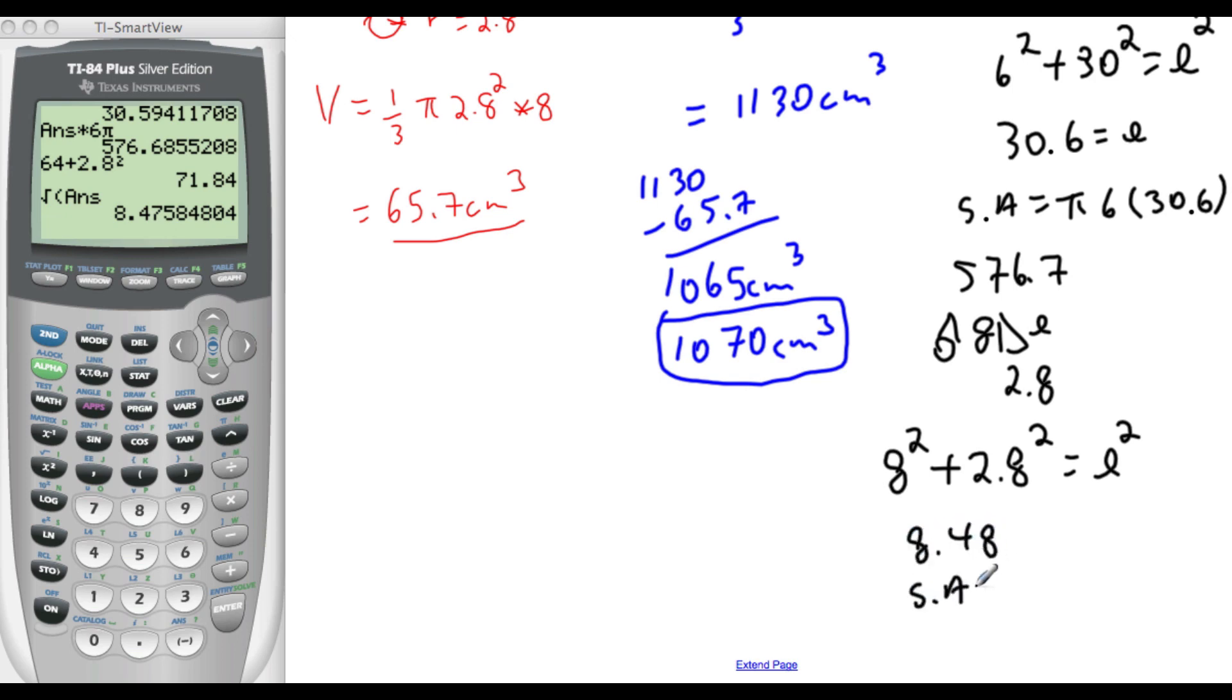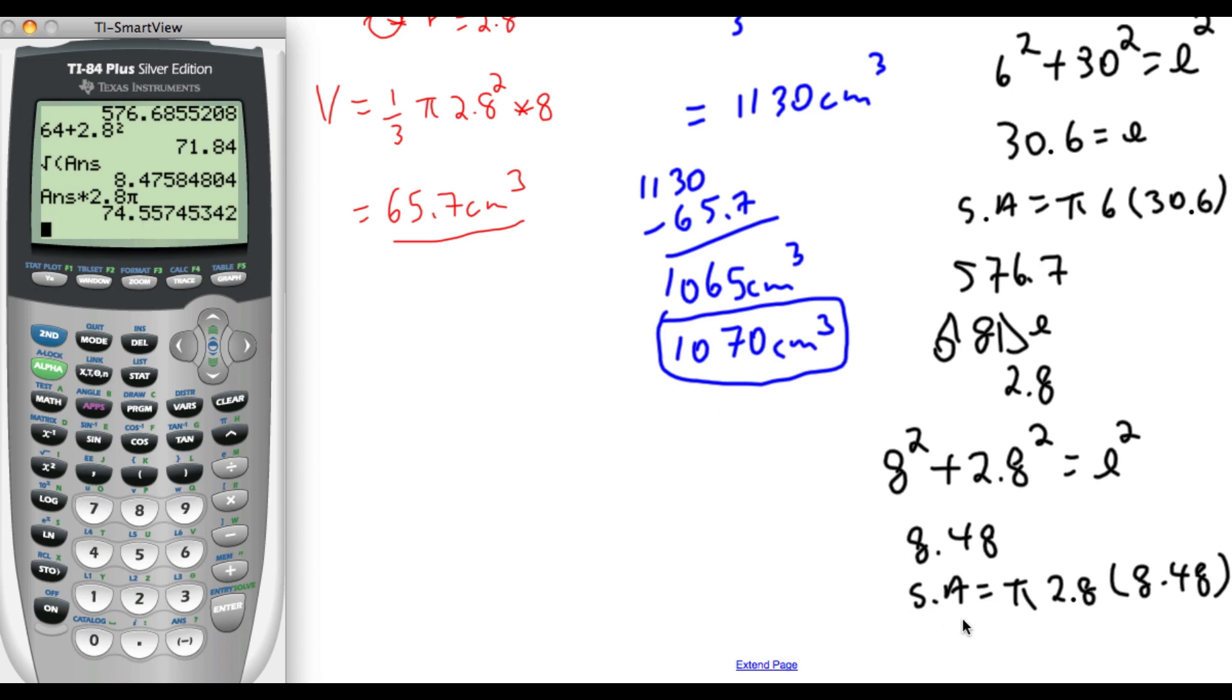So the surface area of the cutoff part is going to be pi times the radius, 2.8 times the slant height of the top, 8.48. So I take this answer, times it by 2.8 and pi. That gives us 74.6.